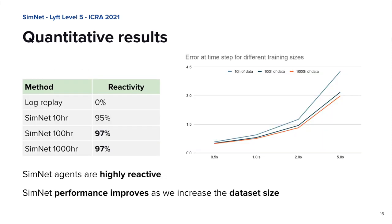We also report a quantitative analysis of SimNet performance in terms of two key metrics: reactivity and realism. We measure reactivity as the number of times an agent can come to a halt without hitting a static SDV. Compared to log replay, SimNet is highly reactive and can almost always stop in time. For realism, we measure it as the average displacement error between SimNet trajectories and the log replay ones. As shown in the plot, the more data we feed to the model, the better it gets. With almost complete reactivity and very low error, SimNet is an excellent candidate for simulating the planning system.